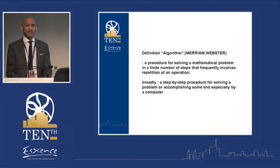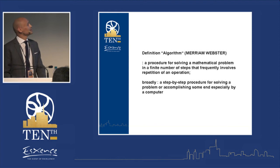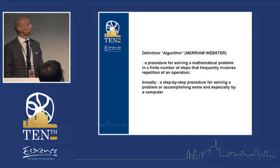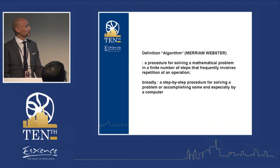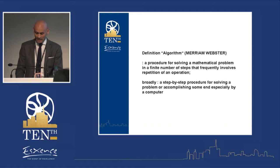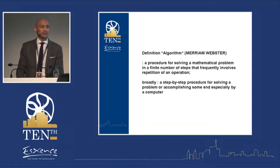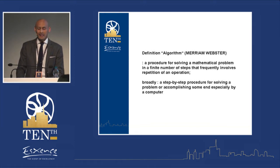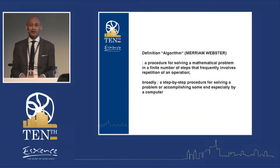On a more formal level, an algorithm is a step-by-step procedure for solving a problem or accomplishing some end, especially by a computer. The fact that this is normally done by a computer implies that we have automatization here. Often it is used to solve complex problems — more complex than making a coffee anyway.